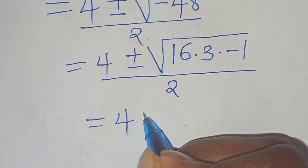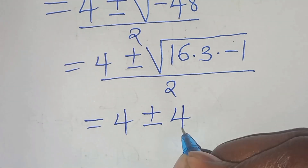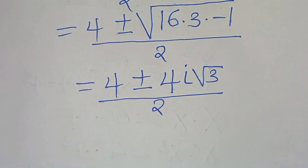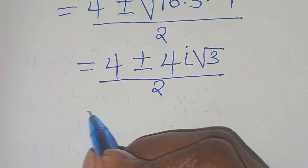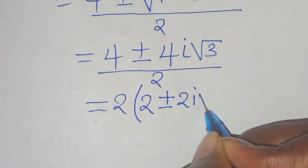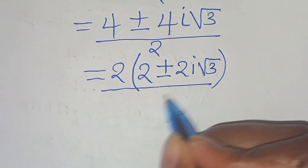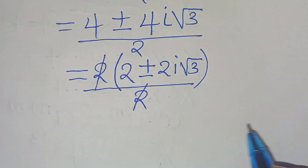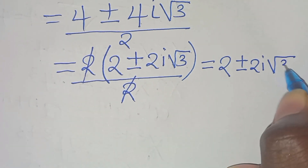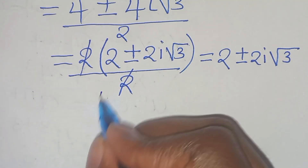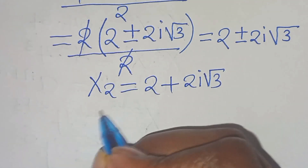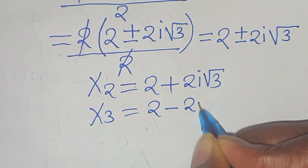Therefore, we have 4 plus or minus the square root of 16, which is 4, times the square root of minus 1, which is i, times the square root of 3, all divided by 2. Factoring out 2 from the numerator, we get 2 times (2 plus or minus 2i root 3), divided by 2, simplifying to 2 plus or minus 2i root 3. This gives x₂ equal to 2 plus 2i root 3, and x₃ equal to 2 minus 2i root 3.